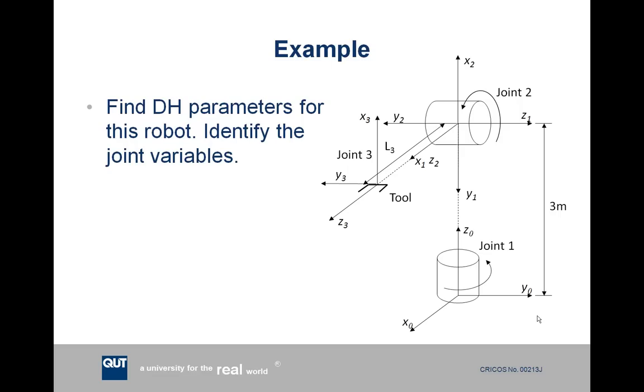Reference frame 3 is the gripper reference frame. z3 is the approach direction that the gripper moves towards an object in, y3 is the direction that the gripper opens and closes against, and then using the right-handed rule once again, we can work out that x3 must be pointing upwards.